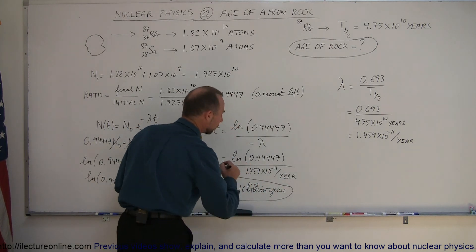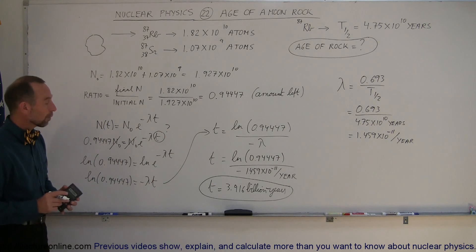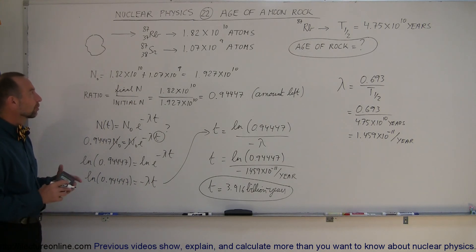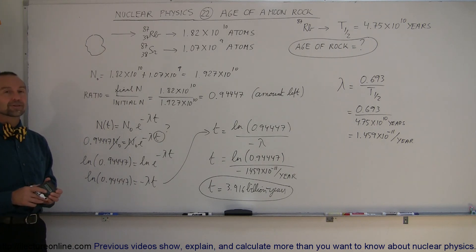And that's how we were able to date some of those moon rocks that we brought back. Of course, considering only if it had rubidium and strontium in them, but if it did, and we took the assumptions to be correct, then we were able to date the age of the rock. So pretty interesting application of nuclear physics.